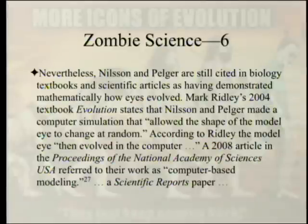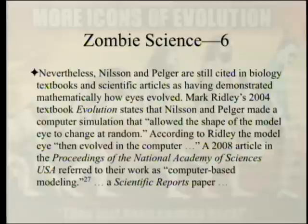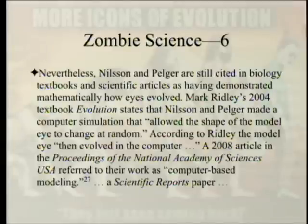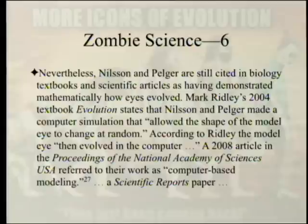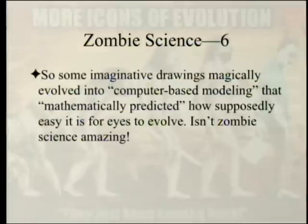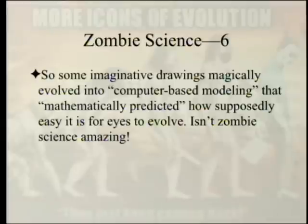An audience member adds that when Nilsson and Pelger were asked whether they had a computer program, their answer was they were working on it. The presenter notes how the story evolved: from 'working on it' to 'finished' to 'computer proof' to 'mathematical proof' — just depends on how much proof you need. A 2008 article in the Proceedings of the National Academy of Sciences USA referred to their work as 'computer-based modeling,' and a Scientific Reports paper said the same thing. Some imaginative drawings magically evolved into computer-based modeling that mathematically predicted how easy it is for eyes to evolve. Isn't zombie science amazing?